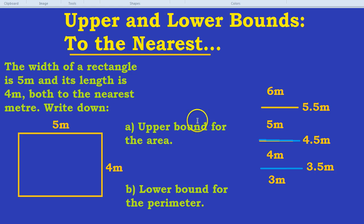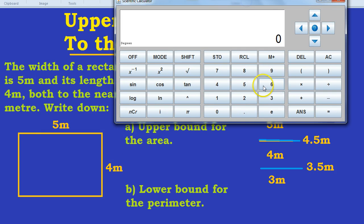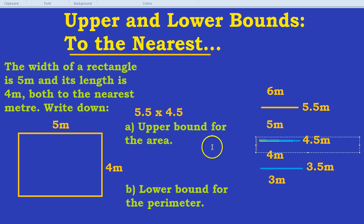So, the upper bound for the area, we're going to use the upper bound for the width and the upper bound for the length. 5.5 times by 4.5. To get the area of a rectangle, you multiply the width by the height. And this would be a calculator question, so let's just use a calculator. 5.5 times by 4.5, which is 24.75.